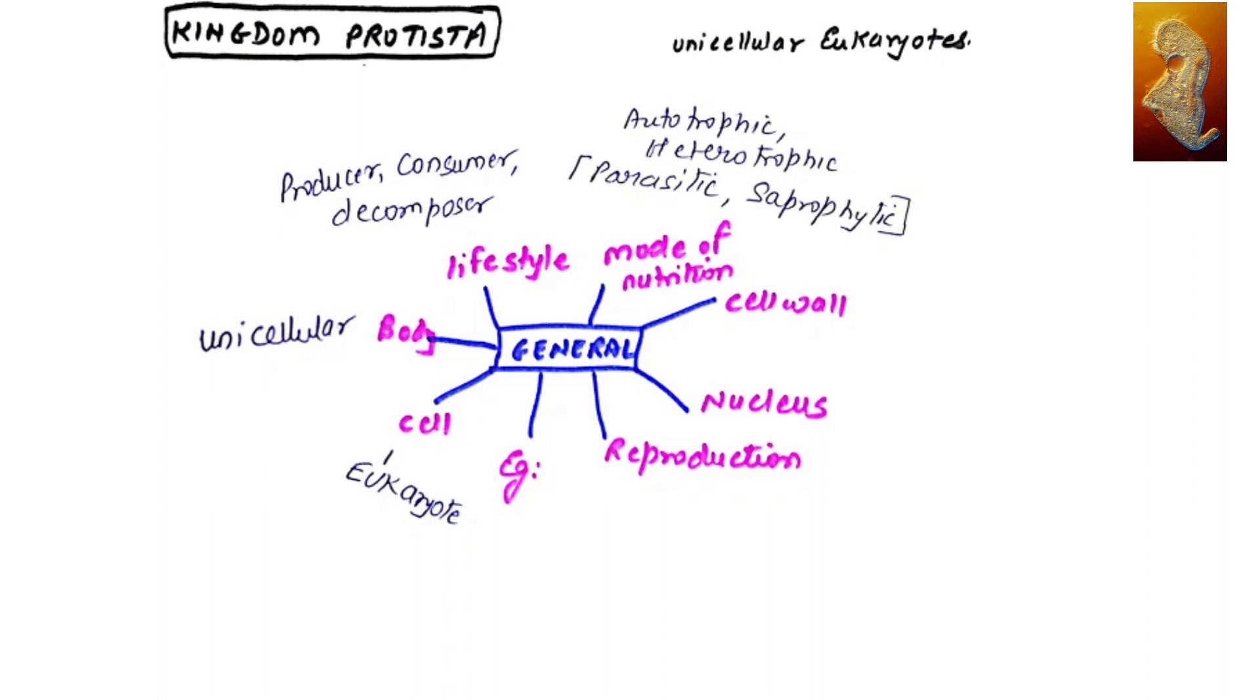Since it is a eukaryotic cell, the cell wall is made up of cellulose only if it is a plant-like protist. Otherwise, in an animal-like protist, the cell wall will be absent.